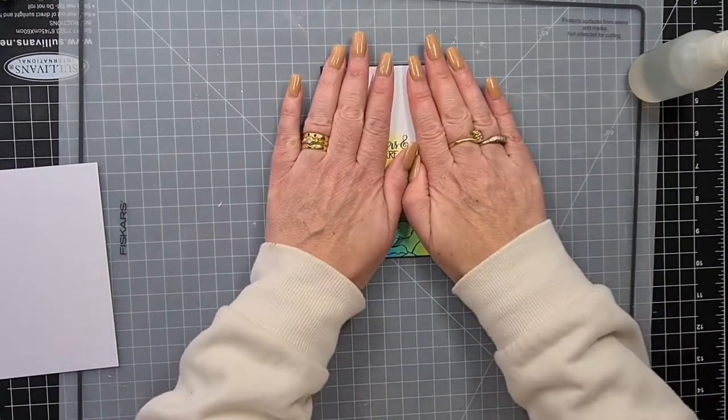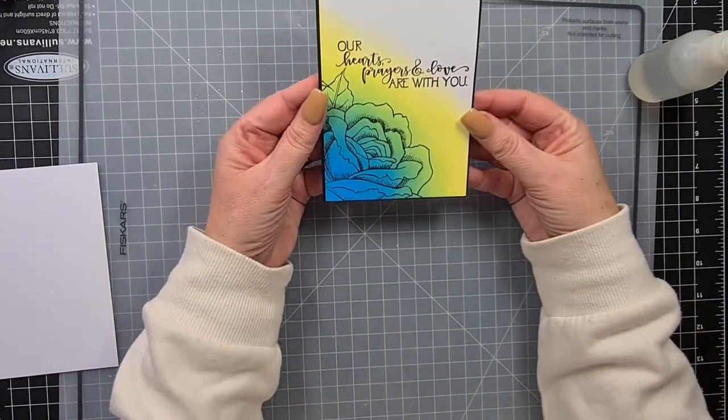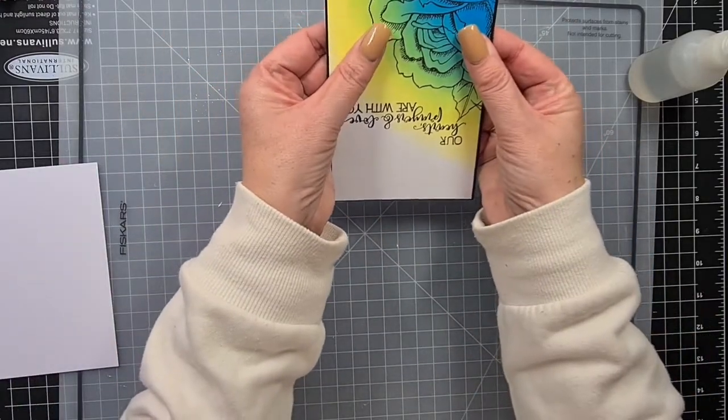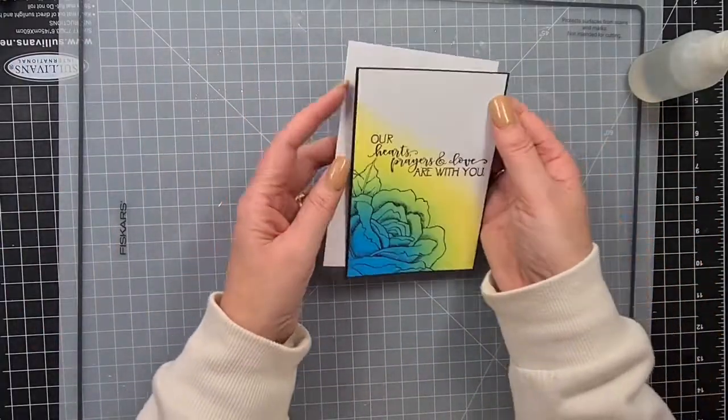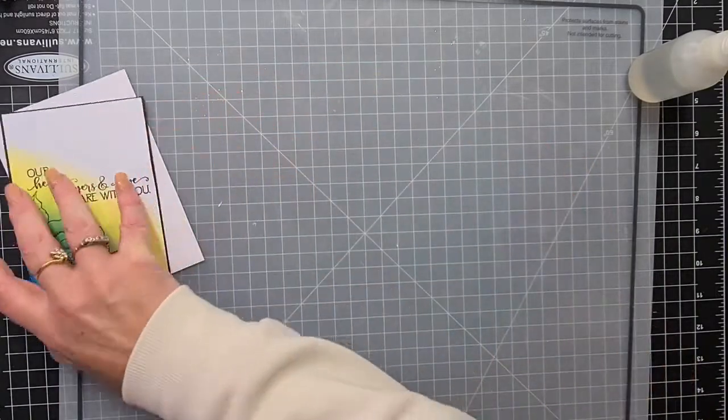That's pretty much gonna be the card. Because we're making a sympathy card, I didn't want to put too much bells and whistles—any glitter or any bling. Just making sure here that it's all lined up properly. That's glued on flat, but we're going to raise it up with a little bit of foam mount.